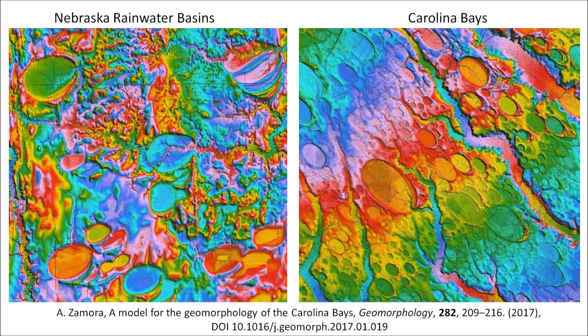The Glacier Ice Impact Hypothesis, published in 2017, proposes that one or more extraterrestrial impacts on the Laurentide Ice Sheet by the Great Lakes ejected pieces of ice in ballistic trajectories. The secondary impacts produced seismic vibrations that liquefied unconsolidated soil, and the oblique impacts of glacier ice created inclined conical cavities that became shallow elliptical basins by viscous relaxation. In Nebraska these basins are called rainwater basins, and along the Atlantic Coastal Plain they are called Carolina Bays.